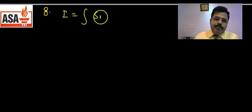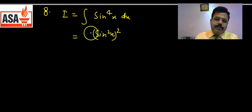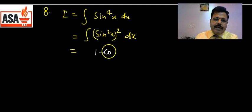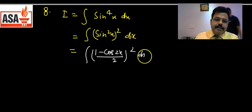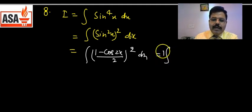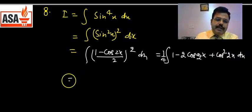Question 8: ∫sin⁴x dx — अकेले even power। sin⁴x = (sin²x)² = [(1 − cos2x)/2]²। Expanding: 1/4 × (1 − 2cos2x + cos²2x)। cos²2x = (1 + cos4x)/2। इसलिए: 1/4 × [1 − 2cos2x + (1 + cos4x)/2]।